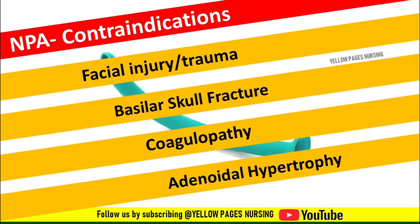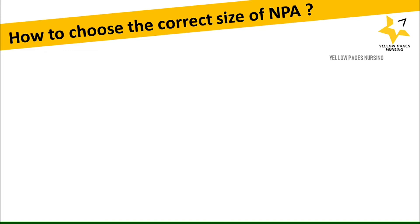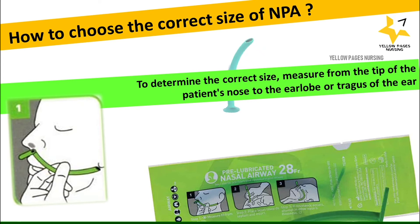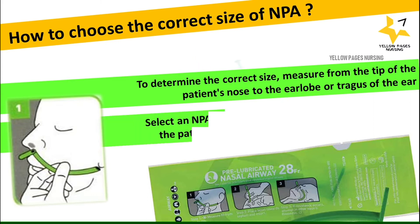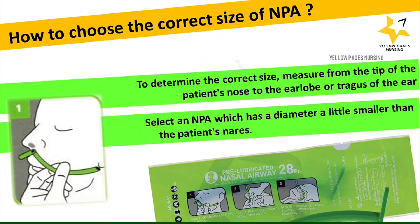To choose the correct size of nasopharyngeal airway, measure from the tip of the patient's nose to the earlobe or tragus of the ear, as shown in the picture. Select a nasopharyngeal airway which has a diameter a little smaller than the patient's nares. Previously, NPA size was selected by measuring the patient's little finger, which is no longer recommended.